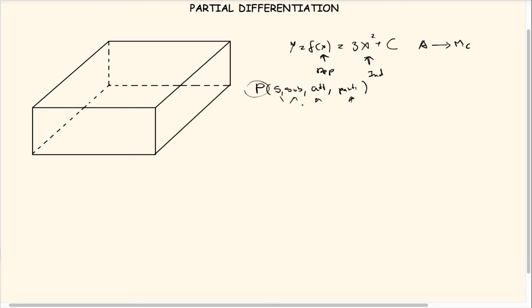None of these parameters should be neglected because together they make up the function. If you want to know the effect or weightage of any one parameter — for example, the effect of doing submissions — the way to find that is to take the partial derivative of the overall function with respect to that particular parameter, ignoring all other existing parameters and focusing on just one.